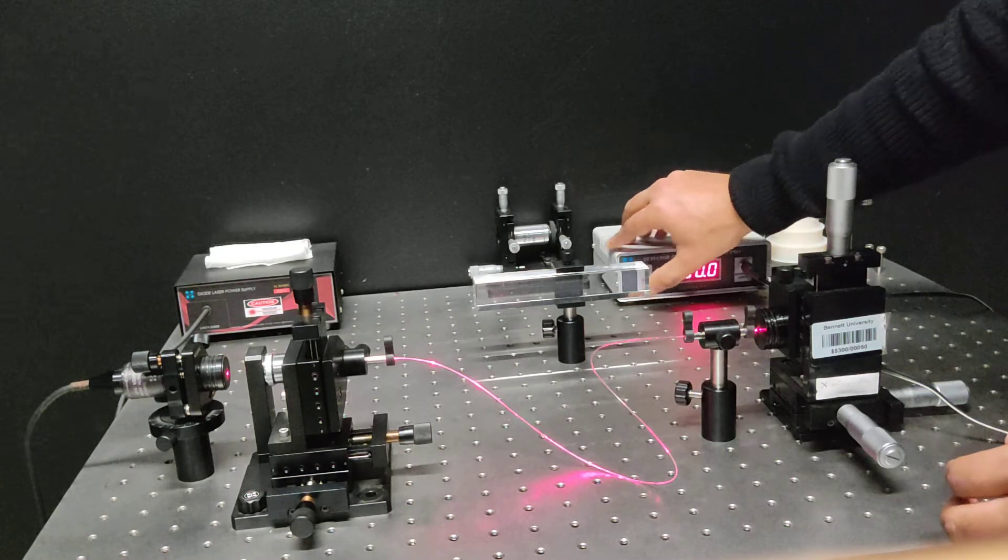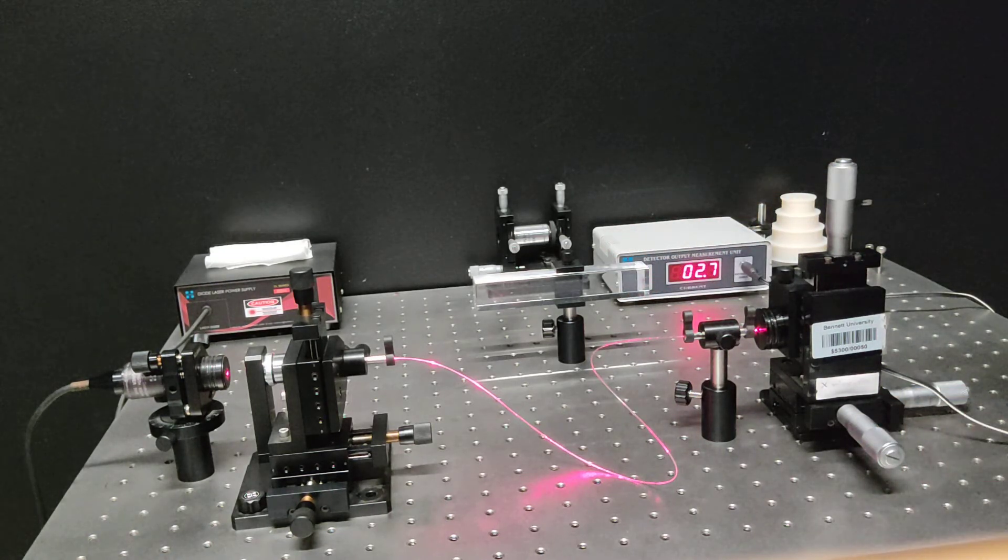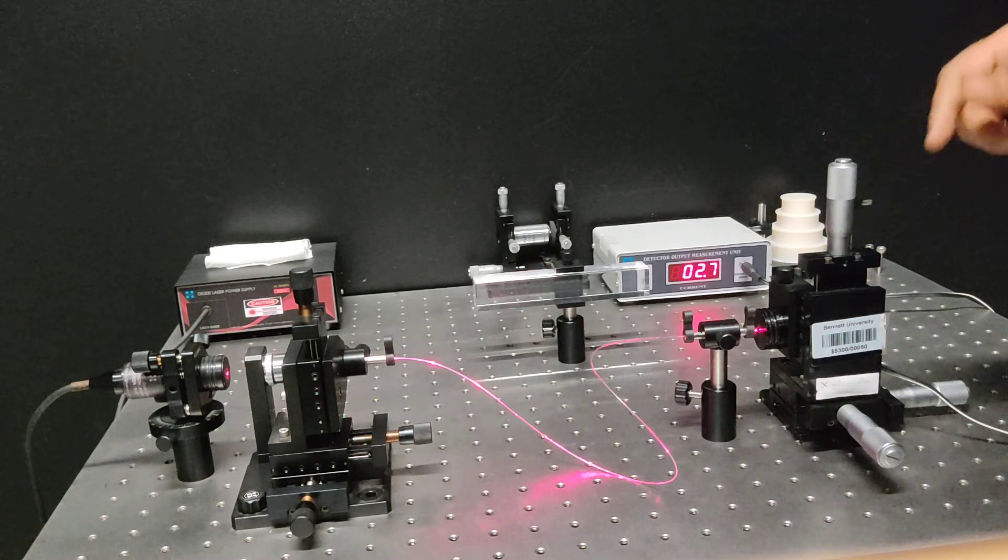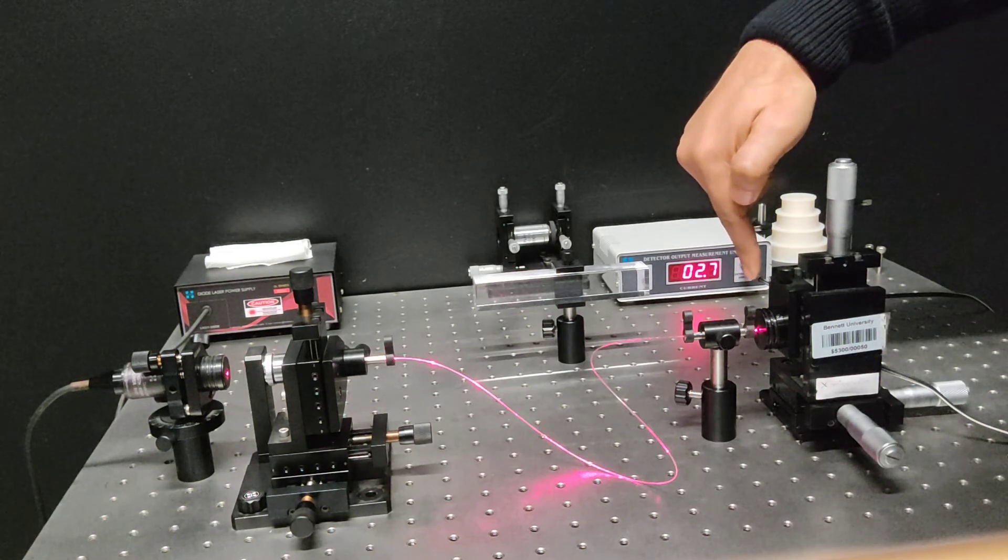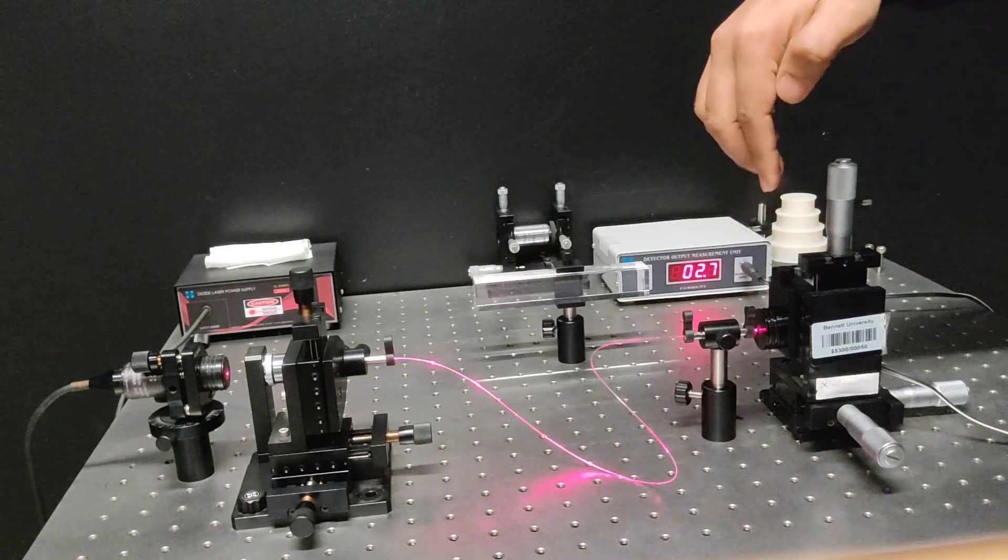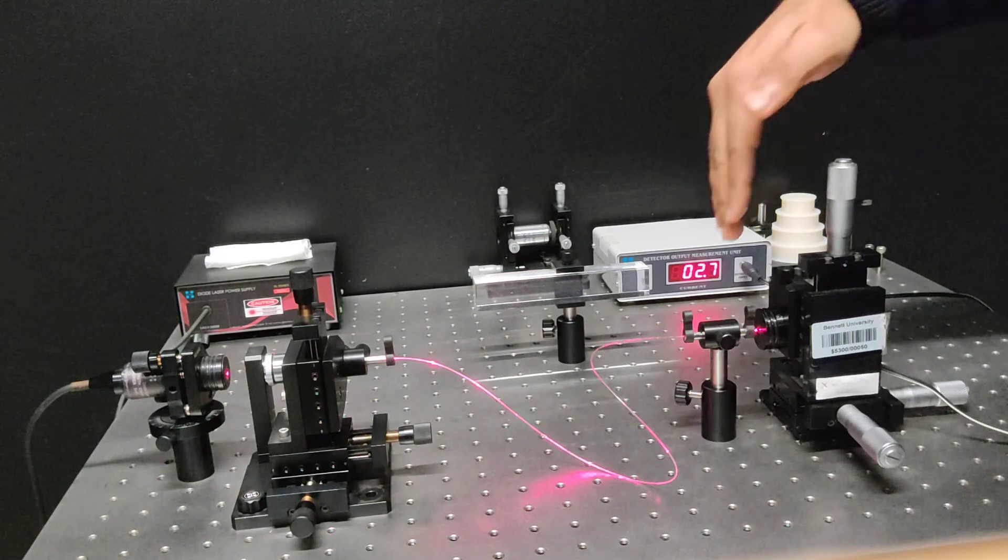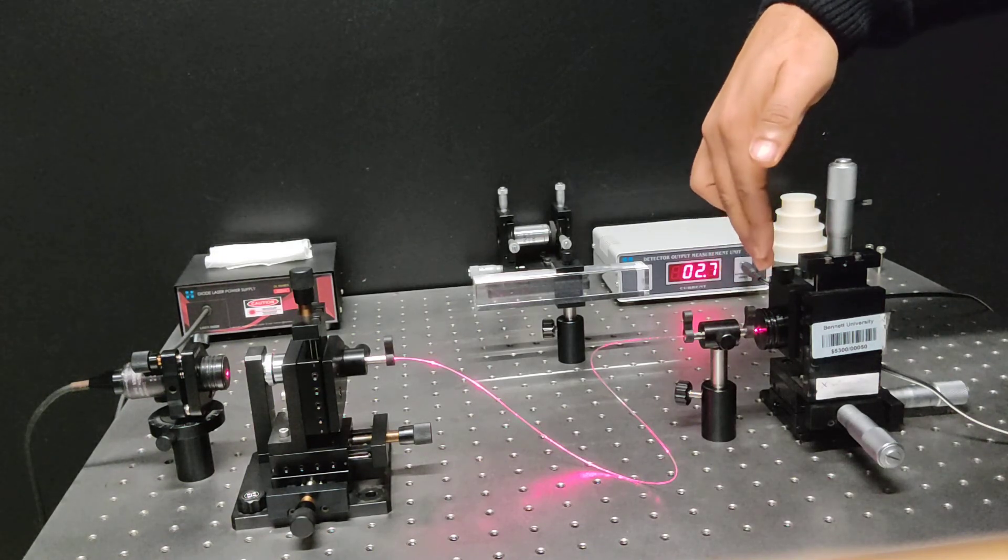I need to reduce the scale so that you can see that. There are other two axes also. Here what you need to do is that you need to move away the detector from the fiber. If you move away from the fiber, the Gaussian distribution will flare out. More will be the separation between the fiber and the detector.